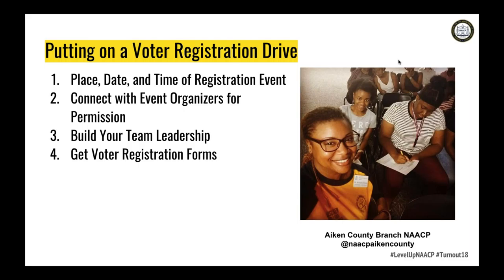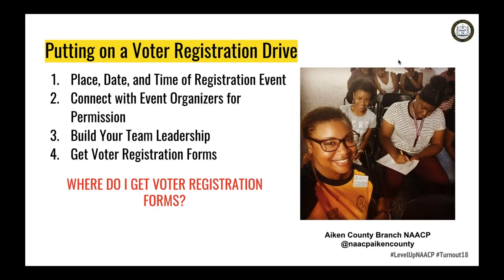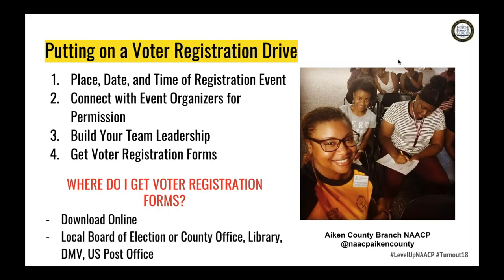Step three: build your team leadership — Jayvon will cover that in base building. Step four: get voter registration forms. You can download universal forms that work for some states, but they're also available at your local board of elections, county offices, library, DMV, and US post office. Connect with those offices to get a large supply of voter registration forms.